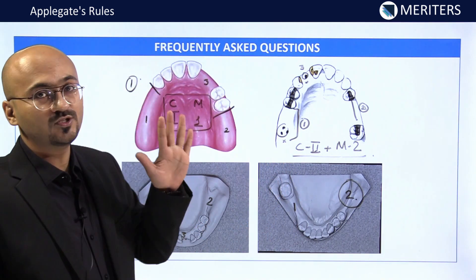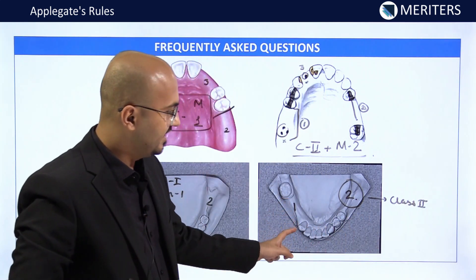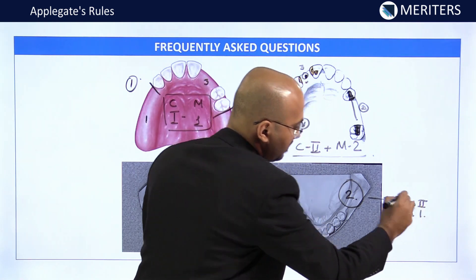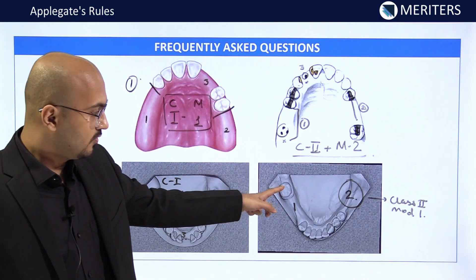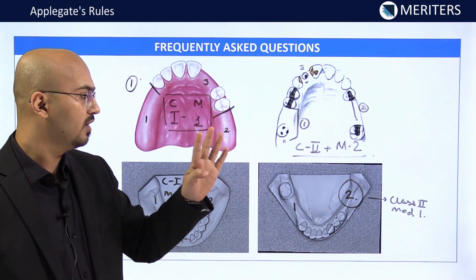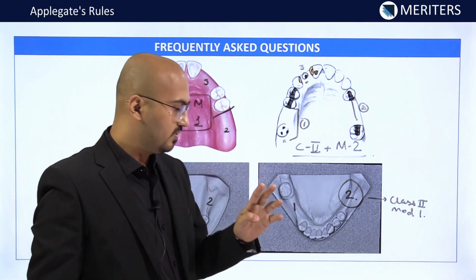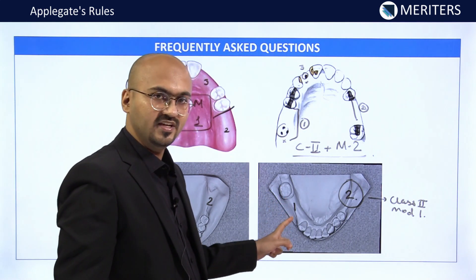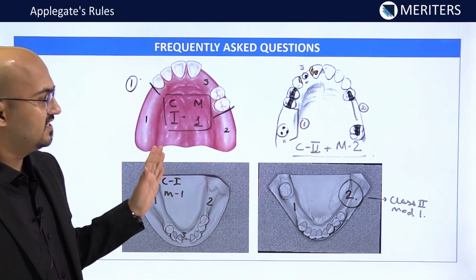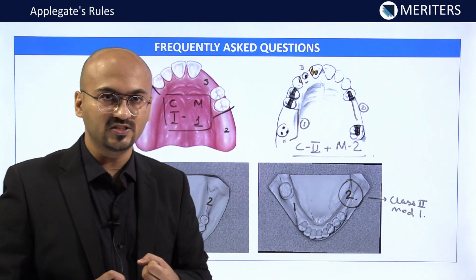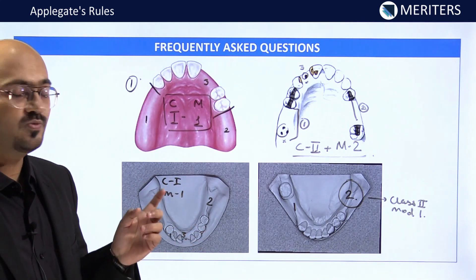In the last example there are two edentulous areas. The posterior-most area determines the classification per Applegate's Rule 5, making it Class 2. The remaining tooth can serve as an abutment per Rule 4, so the other area becomes a modification space. This is Kennedy's Class 2 Modification 1 mandibular partially edentulous arch. These application-based questions are routinely asked in exams, and a solid understanding of Applegate's rules can help you score well.